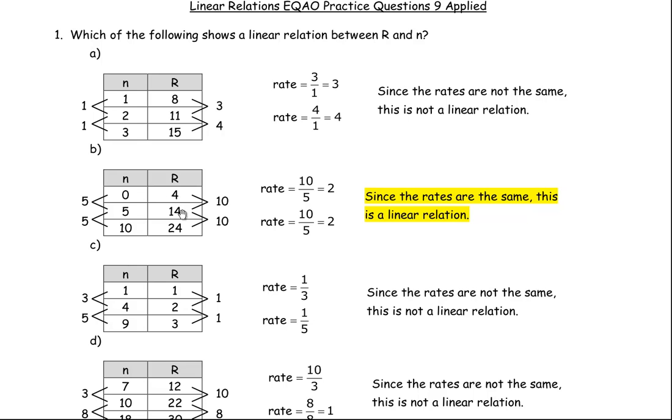For example in B here, from 4 to 14 it goes up 10, from 14 to 24 it goes up 10. In each case from 0 to 5 and then 5 to 10, they're going up by 5 in each case. So this 10 divided by this 5 is a rate of 2. This 10 divided by this 5 is a rate of 2. So this is a linear relation.